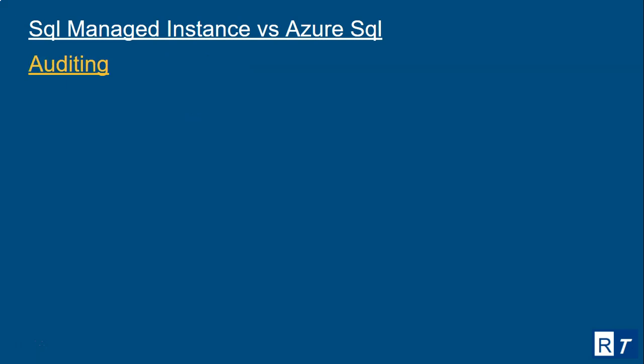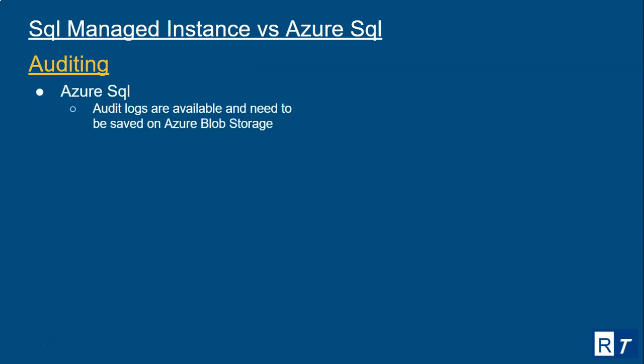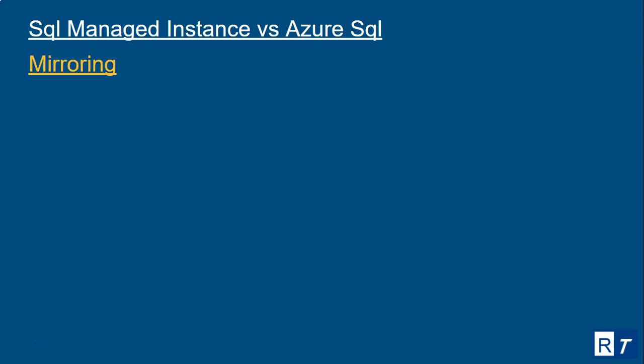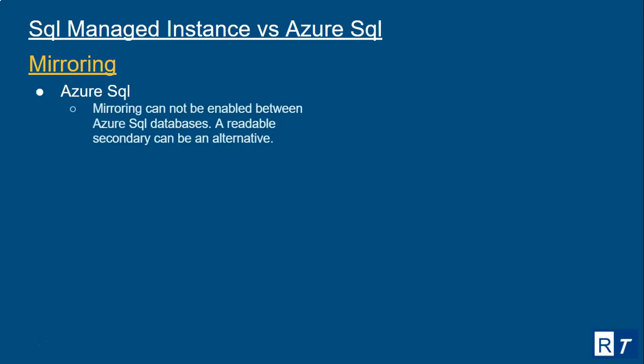For auditing: Azure SQL audit logs are available and need to be saved in Azure Blob storage. For Azure SQL Managed Instance, this is the same. For mirroring: mirroring cannot be enabled between Azure SQL Databases, but a readable secondary can be an alternative.